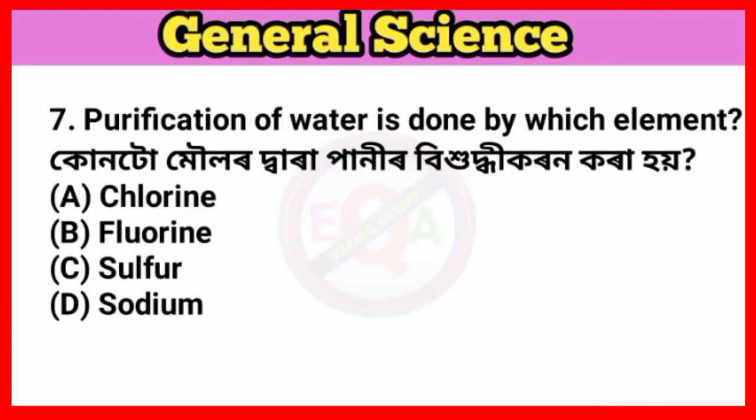Question number seven: Purification of water is done by which element? Answer option A: Chlorine.